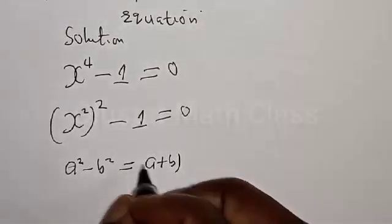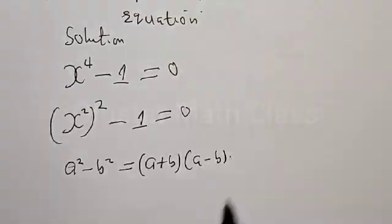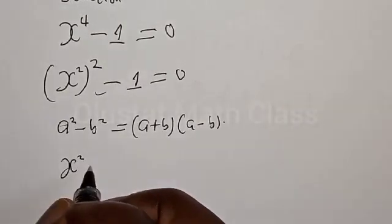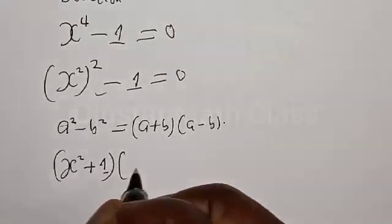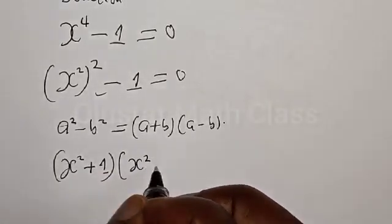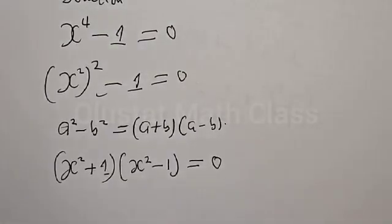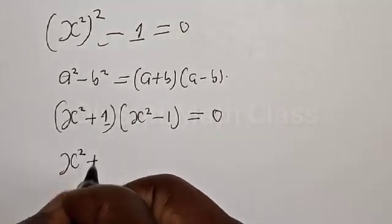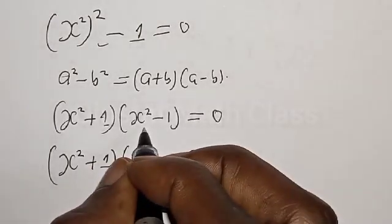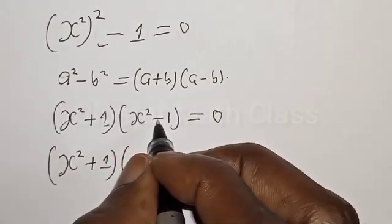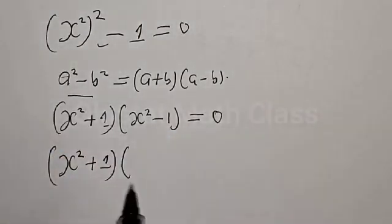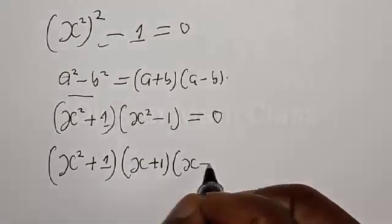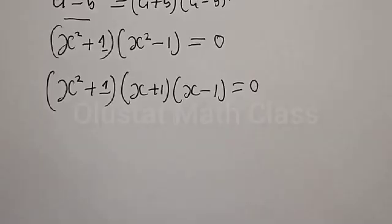This is the difference of two squares. We have s squared plus 1 multiplied by s squared minus 1 equal to 0. This can also be expressed as s squared plus 1, then multiplied by — this one is also a difference of two squares because we have s squared minus 1 squared — so we apply this formula again: s squared plus 1, multiplied by s plus 1, multiplied by s minus 1, equal to 0.